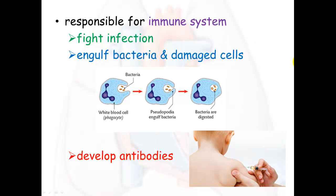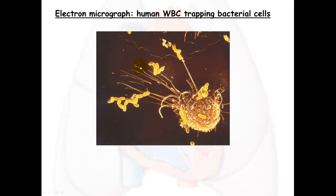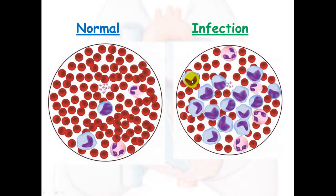Here's a picture of a white blood cell illustrated as a viking soldier, out to protect us and kill the bad stuff. This electron microscope photo shows a white blood cell actually attacking bacterial cells — it sends out shoots to grab onto the bacteria, then sucks it in and eats it. Normally, white blood cells are only about 0.1 percent of all blood cells, but if you have an infection, they multiply and come out in force to attack bacteria and defend your immune system.